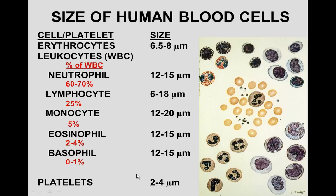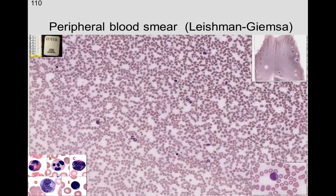The smallest formed elements are the platelets, and here we can see platelets. So we see lymphocytes, neutrophils, monocytes, eosinophils, basophils, and the different components in the blood.